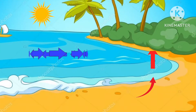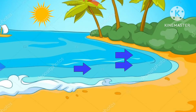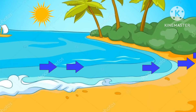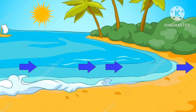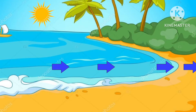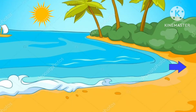Once the air above the land rises up by convection, it creates a space for the cool breeze from the sea to flow in. This is called sea breeze.